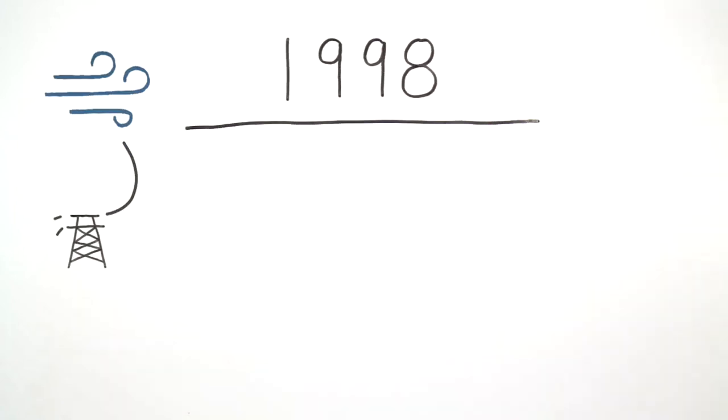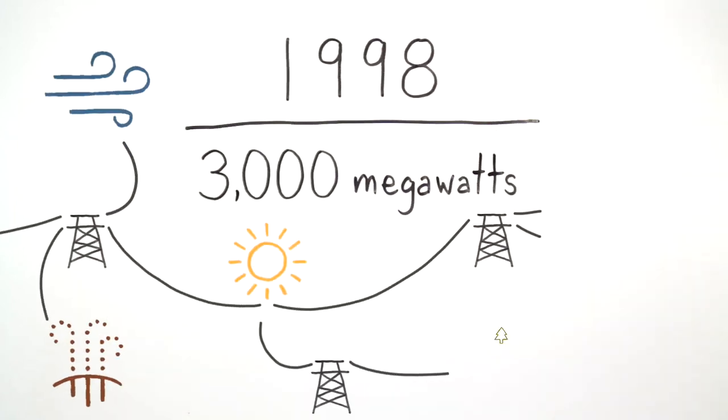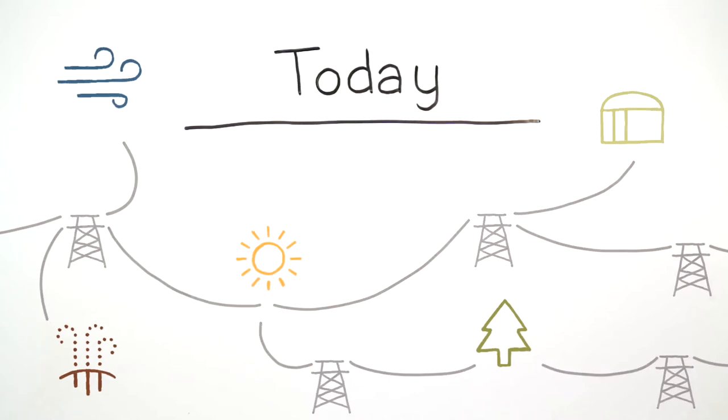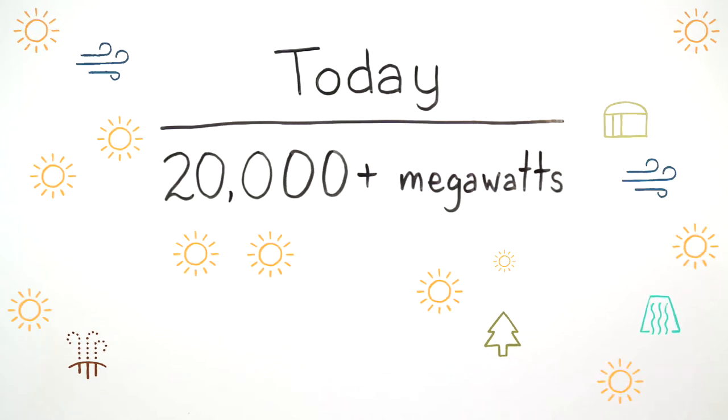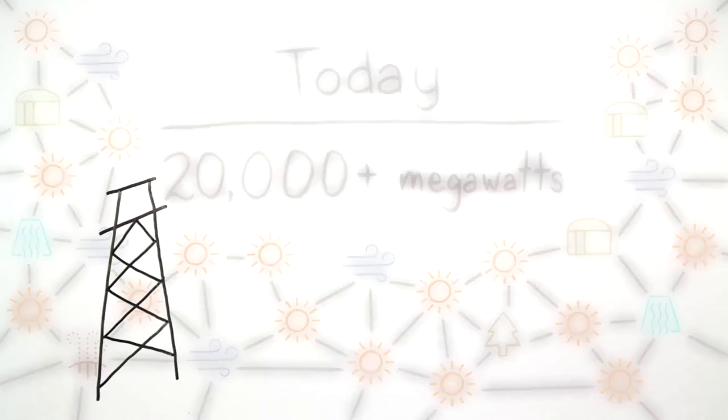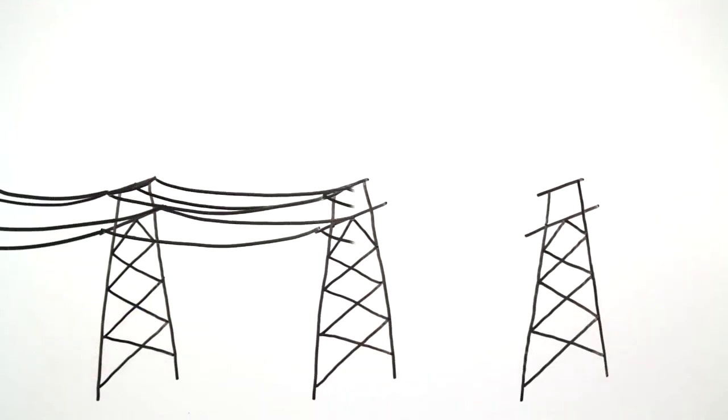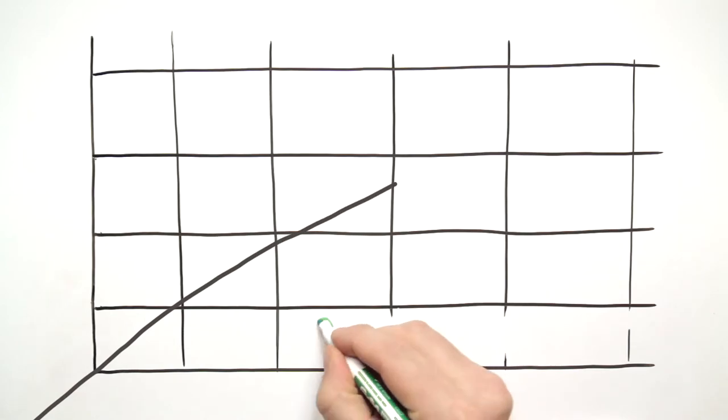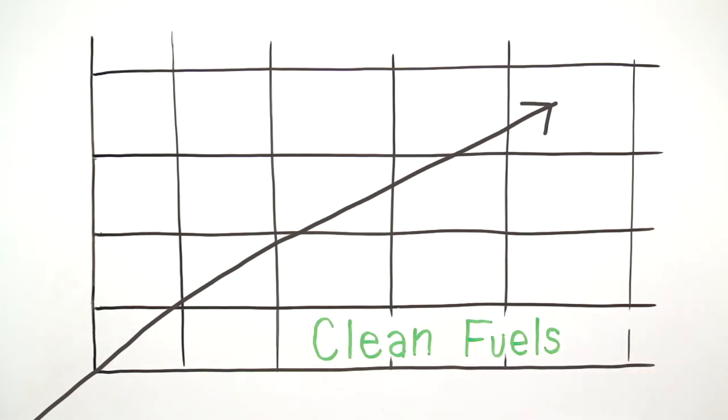In 1998, the ISO had about 3,000 megawatts of renewables interconnected. Today, we have over 20,000 megawatts of renewable resources interconnected, and we're committed at every level of our company to transforming the grid that will efficiently support zero-carbon fuels at higher and higher levels.